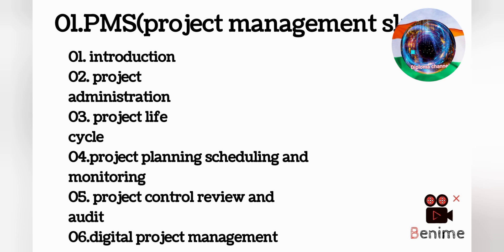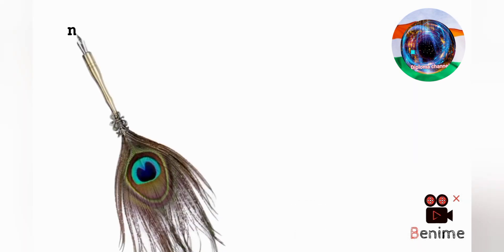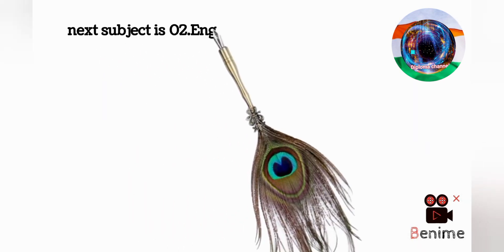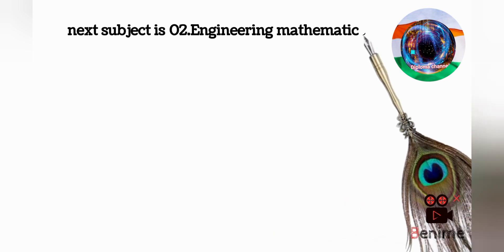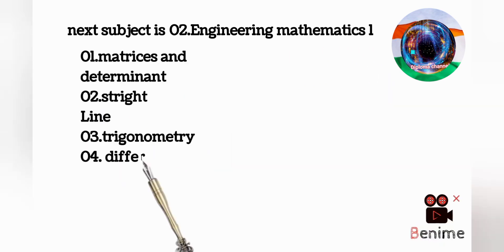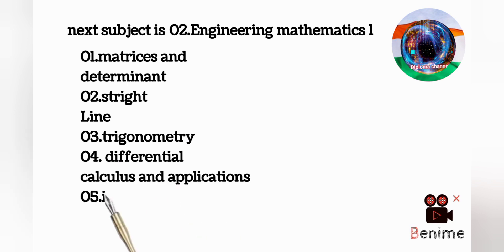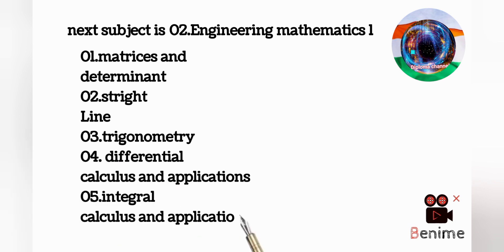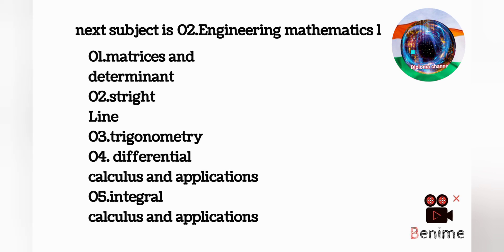The next subject is engineering mathematics 1. This is one theory subject — internal 50 marks and end examination 50 marks. This subject has a total of five chapters. First chapter is matrices and determinant. Second chapter is straight line. Third chapter is trigonometry. Fourth chapter is differential calculus and applications. Fifth chapter is integral calculus applications.